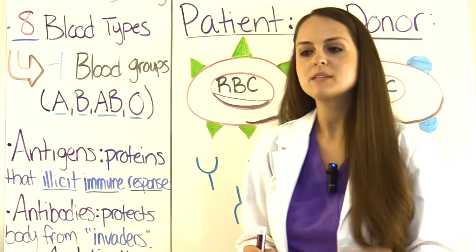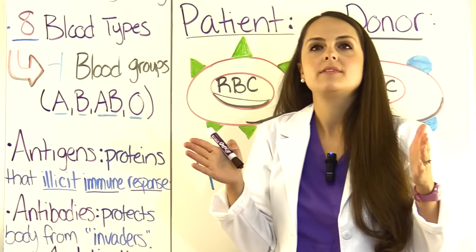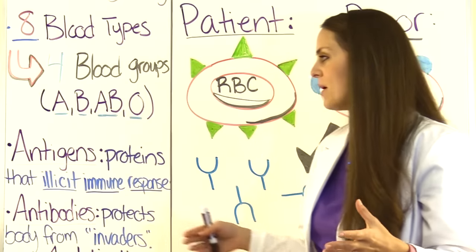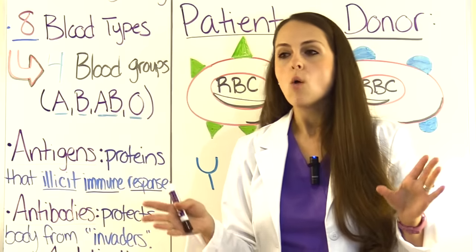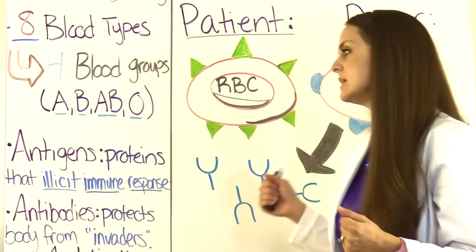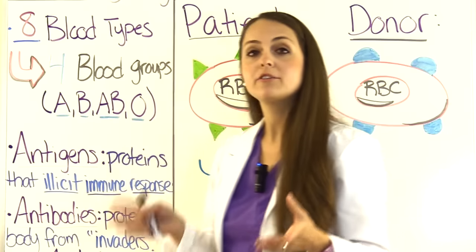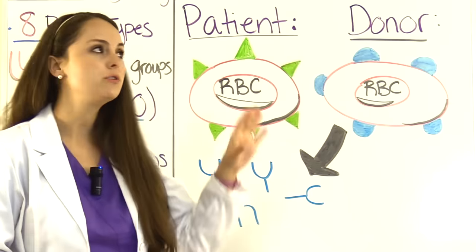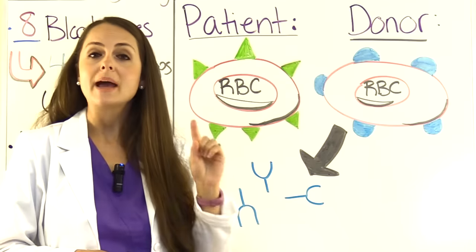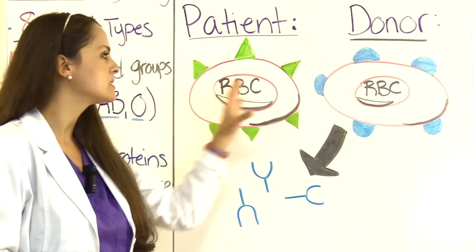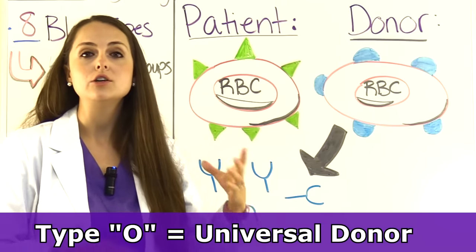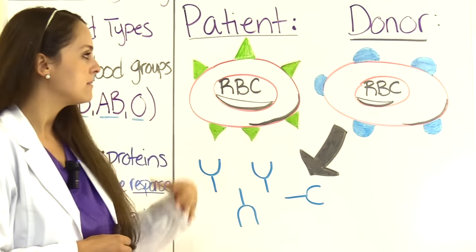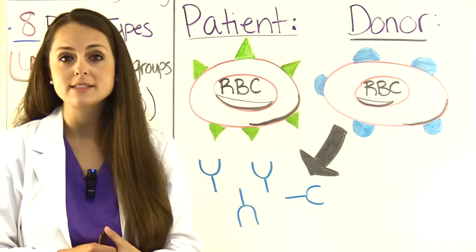Whenever we're looking at blood types and trying to determine what our patient is compatible with, we have to understand the concepts of antigens and antibodies. Antigens are proteins found on the surface of a red blood cell, and depending on what blood type you have determines what antigen you have on your red blood cell. Patients with type O have no antigens on their surface, which is why type O can be the universal donor — they can donate to everyone. Type A will have A antigens on the red blood cell surface.